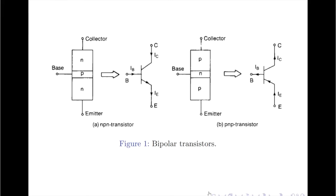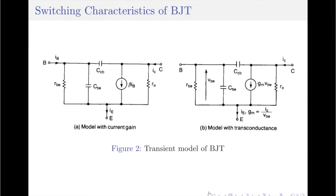Two parallel capacitances are exhibited by a forward biased PN junction: a depletion layer capacitance and a diffusion capacitance. A reverse biased PN junction, on the other hand, has depletion capacitance only. These capacitances do not play any role under steady state conditions; however, they contribute to the transistor's turn-on and turn-off behavior under transient conditions.